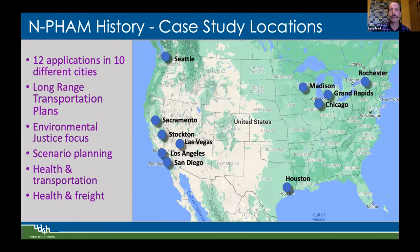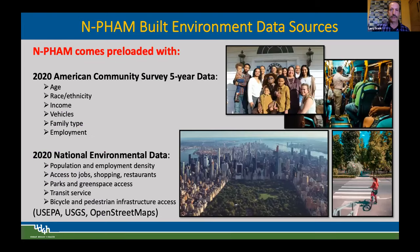NFAM has been applied in 12 applications across 10 different regions, mostly for long-range transportation plans, but also for environmental justice focus — such as in the Houston area regarding freeway expansion. This is part of scenario planning, bringing health into the scenario planning process so health considerations are included. We have done an amazing job of externalizing health from the cost-benefit analysis process — and that's what this talk argues against. NFAM comes pre-loaded with data from the American Community Survey five-year data on demographic factors and the National Environment Database on built environment features.